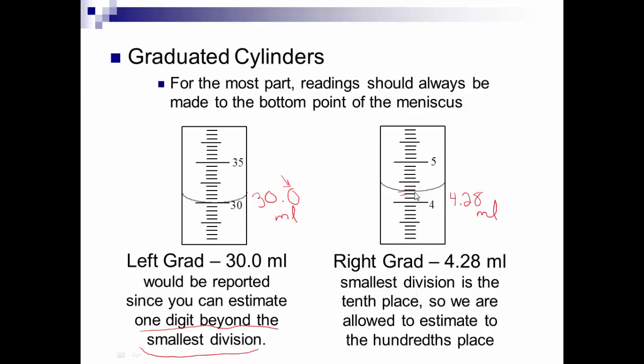One digit beyond the smallest division. This is really the key right here to what you can estimate. Your graduated cylinder only marks to the ones place. So, your value of your number can only go to one digit smaller than that. And, here, pretty good guess for us. 4.28. You could have said 4.29 and that would have been okay as well, just because of how close those lines are together. It allows us to estimate to the hundredths place because each one of these lines is already to the tenths place.